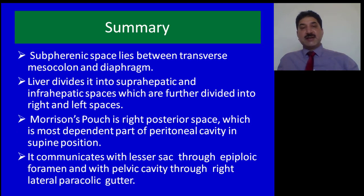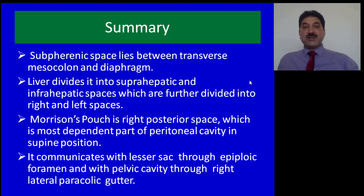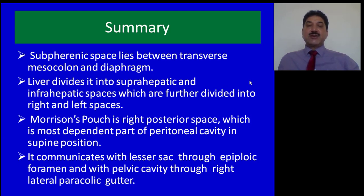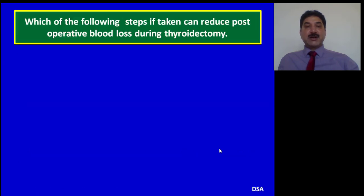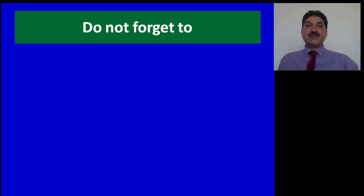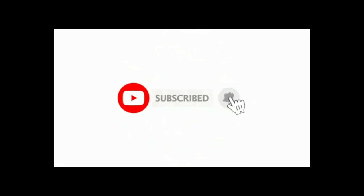To summarize: subphrenic spaces lie between the transverse colon and the diaphragm. The liver divides the supracolic compartment into suprahepatic and infrahepatic spaces, which are further divided into right and left spaces. Morrison's pouch is the right posterior intraperitoneal space and the most dependent part of the peritoneal cavity in the supine position. It communicates with the lesser sac through the epiploic foramen and with the pelvic cavity through the right lateral paracolic gutter. Please like, subscribe, and share this lecture. Thank you for watching.